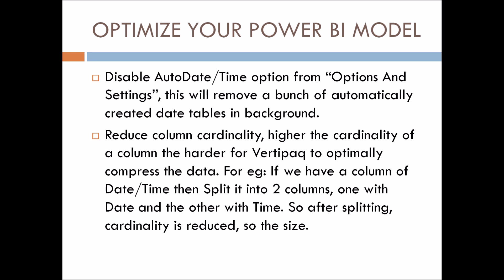Reduce column cardinality. The higher the cardinality of a column, the harder it is for VertiPaq to optimally compress the data. VertiPaq is the in-memory analytics X-velocity engine used to compress the data pulled into Power BI. For example, if you have a date/time column, split it into two columns — one with date and one with time. After splitting, cardinality is reduced and so is the size, improving performance.